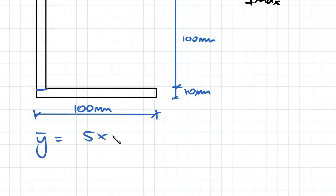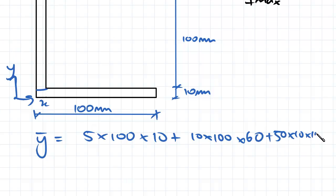That's equal to 5 times 100 for the area of this bottom rectangle here. So 100 times 10 for the area of this bottom rectangle here, multiplied by 5, the distance from our coordinates here, all the way up to the centroid of this bottom rectangle. We'll do the same for all the other rectangles: 10 times 100 times 60, distance from this point here to the centroid, plus 50 times 10 times 115.